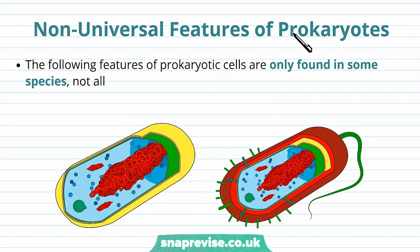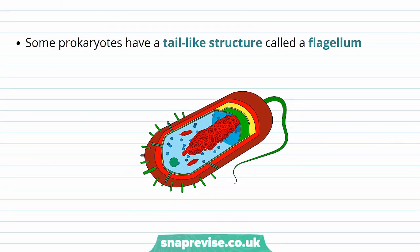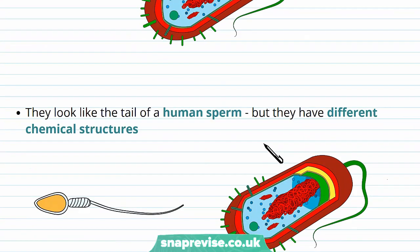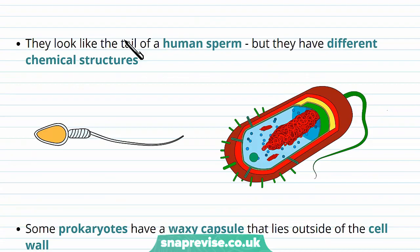Some features of prokaryotes aren't present in all of them — they're only found in some species. The cell membrane, DNA, and cell wall are found in all prokaryotes, but some features are not. Some prokaryotes have a tail-like structure called a flagellum, which sticks out resembling a tail. It's not a cilia or undulipodium, which are different structures. They look very similar to the tail of a human sperm cell, but they have different chemical structures so they are not the same thing.